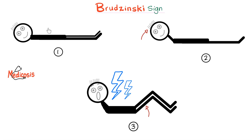Kernig's sign was discussed in the previous video. Now it's time for Brudzinski's sign. Have the patient lay back on the exam table, then you flex the patient's neck. The patient will feel pain and will flex the hip. Why? Because this patient has meningitis — the meninges are inflamed. When you try to flex the neck, you stretch the meninges even more, and as a response the patient will try to relieve that pressure by flexing the hip.